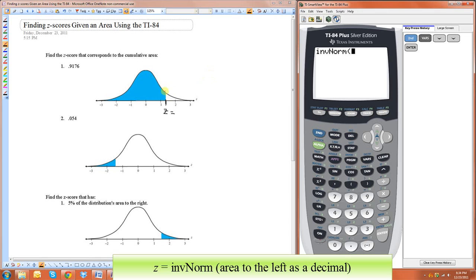Then all you have to do is put the area, the cumulative area that represents this. So this area is 0.9176. So we just do invNorm of 0.9176. And that's going to tell me the value here, the z-value, that's going to give me an area of 0.9176. So it's just 1.389.